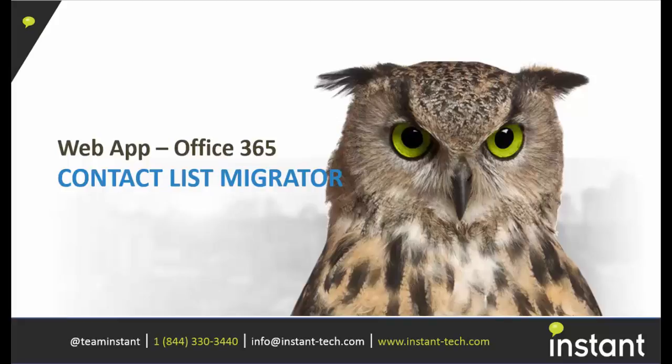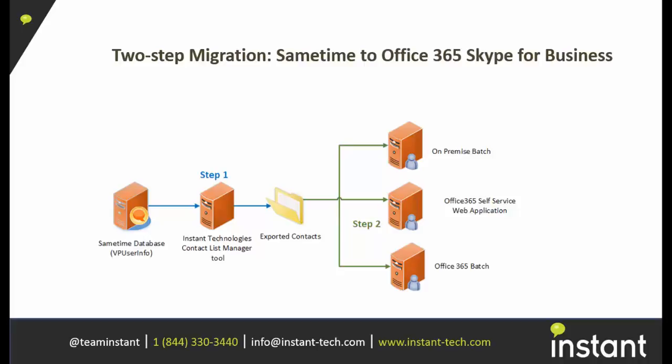This video will show how to migrate contact lists into Skype for Business on Office 365 by using the Contact List Migrator web app. This is the second step in a two-part process that encompasses migrating buddy lists from Sametime into Skype for Business. The prerequisite not shown in this video is exporting the contact lists from Sametime and putting them on the server where this web app is hosted.